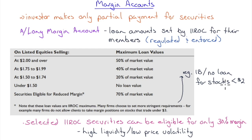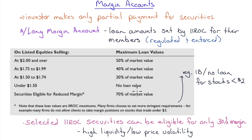These are IIROC maximums — many firms set more stringent requirements. For example, Interactive Brokers has no loan for stocks under $2. Brokers can make margin requirements stricter (requiring you to put up more), but they cannot lend more than the IIROC maximum loan value. They can go lower on the loan value but not higher.